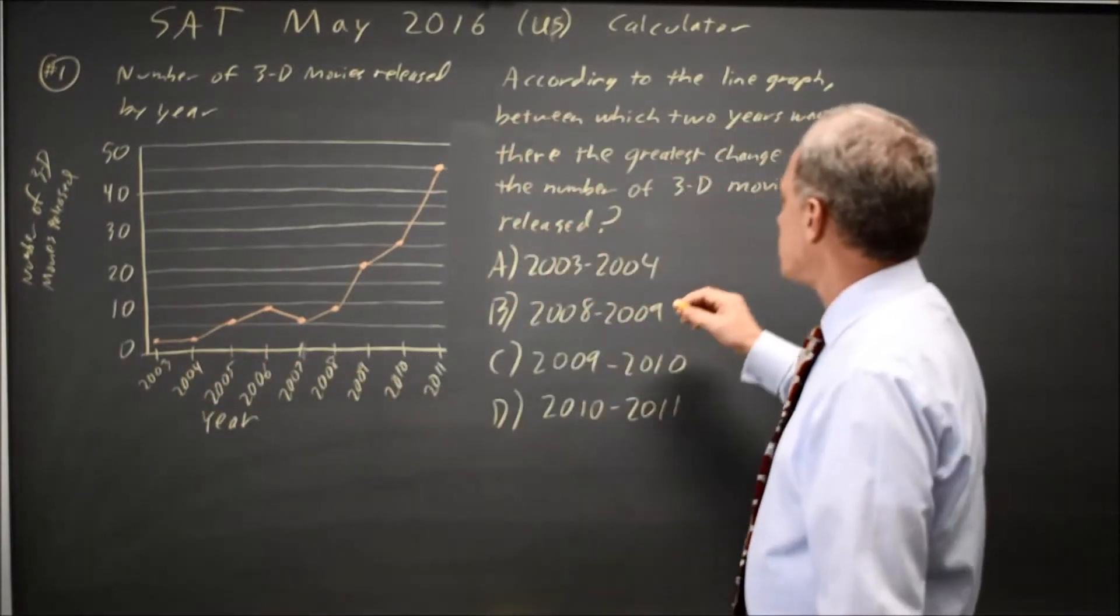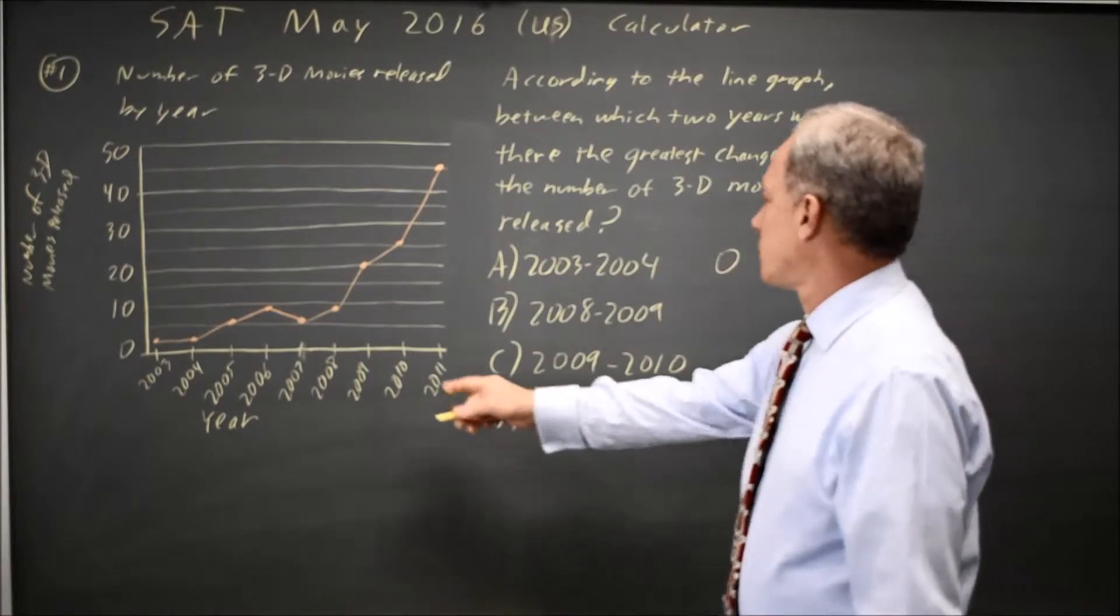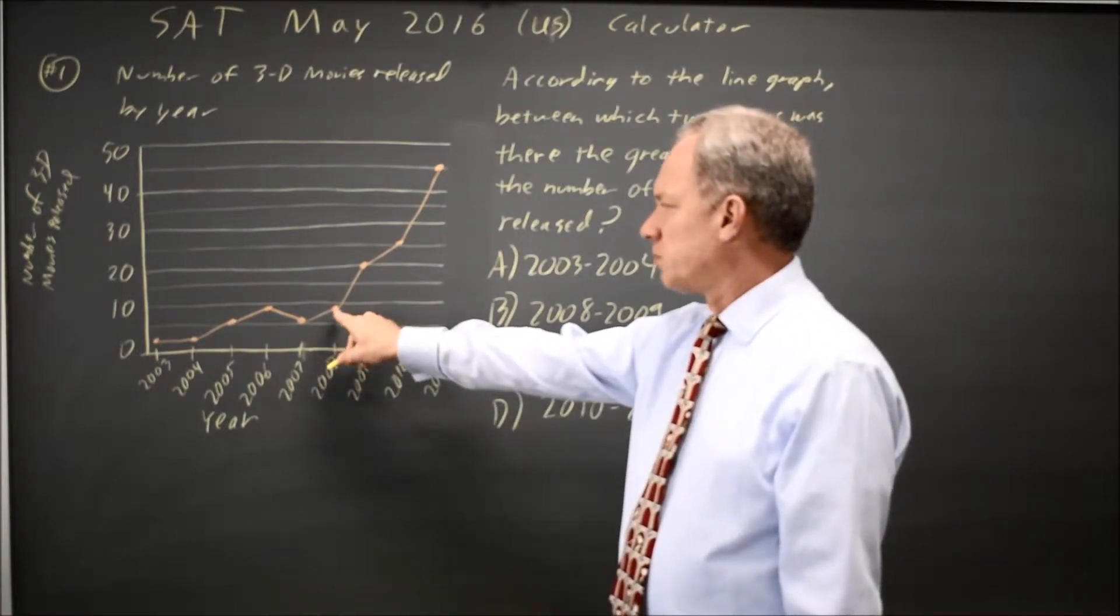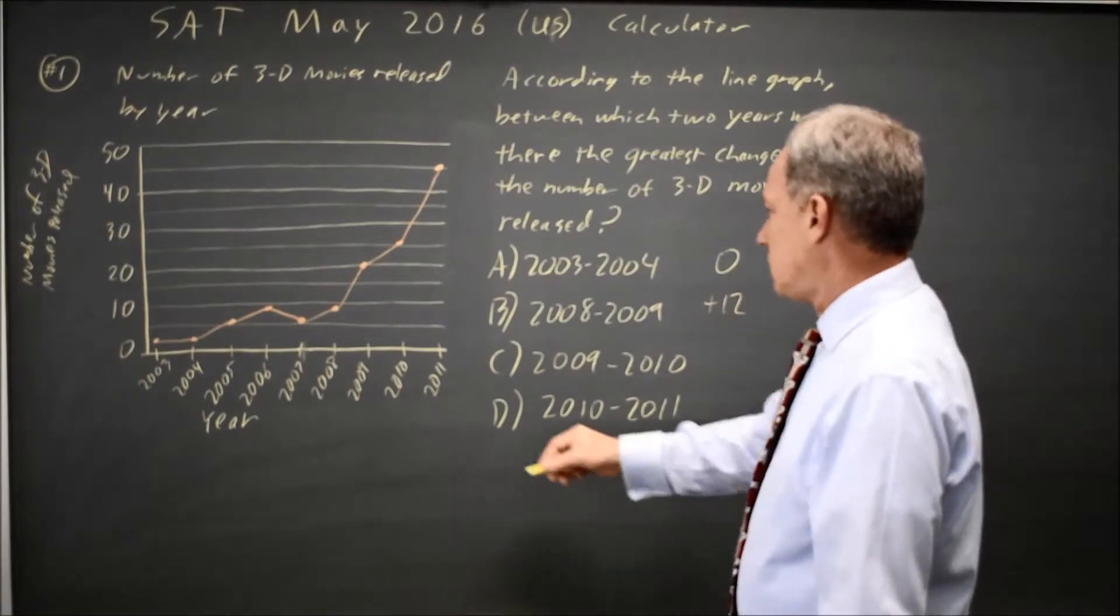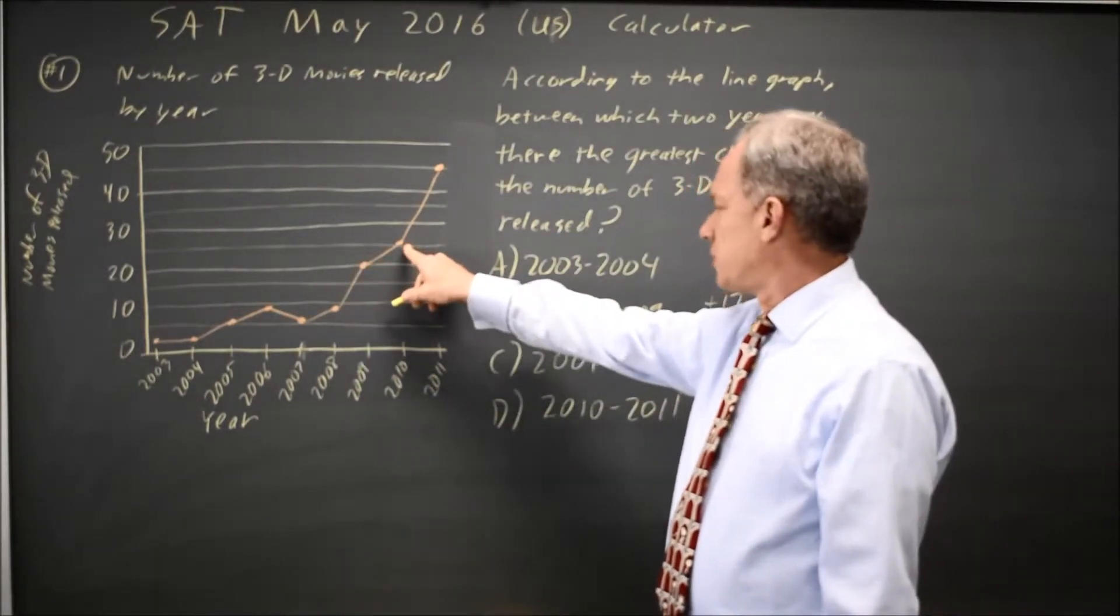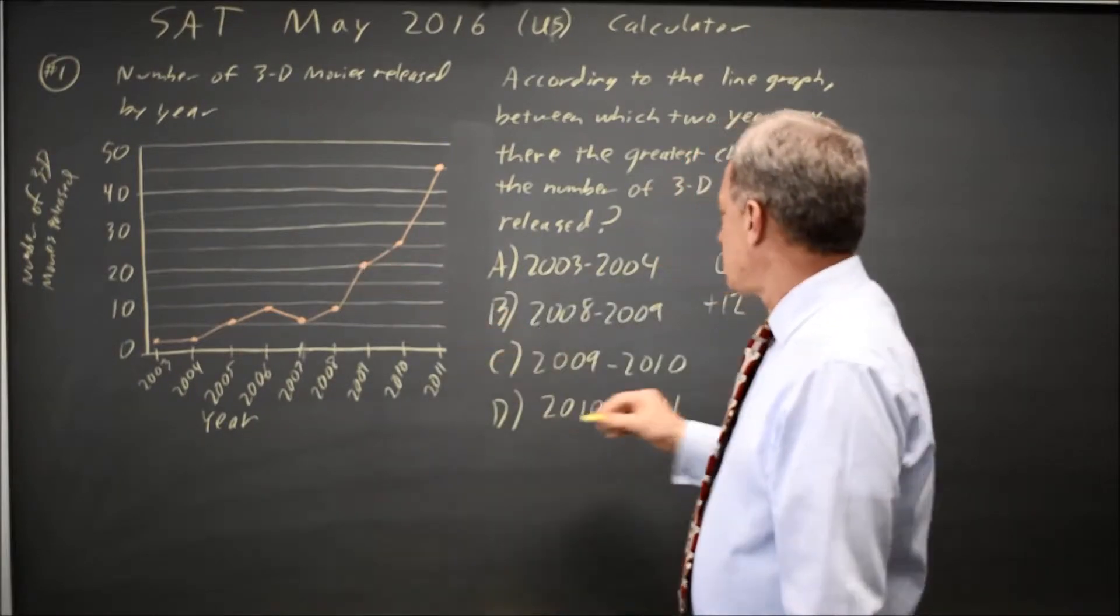2003 to 2004 the change looks like zero. 2008 to 2009 we're going from about 8 to 20 so that's plus 12. 2009 to 2010 looks like we went up 6.